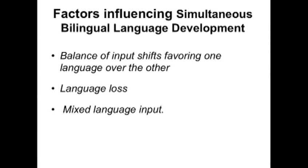In simultaneous bilingual development, the balance shifts depending on exposure, and there could be language loss. For example, if the mom was speaking mostly English to the child and an aunt arrives from Romania speaking only Romanian, the child — at 12, 15, 18, or 24 months old — might shift and lose much of the English while Romanian comes up. Mixed language input can happen with both languages at the same time.